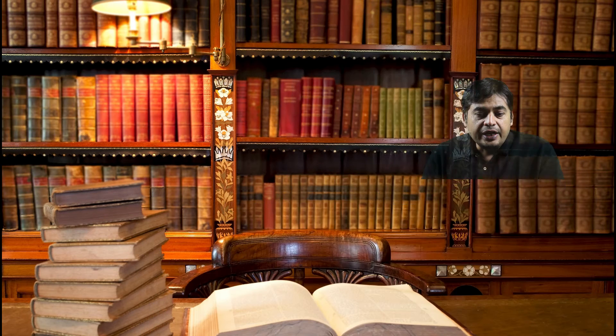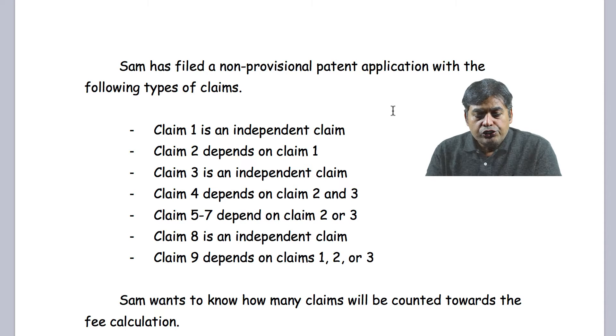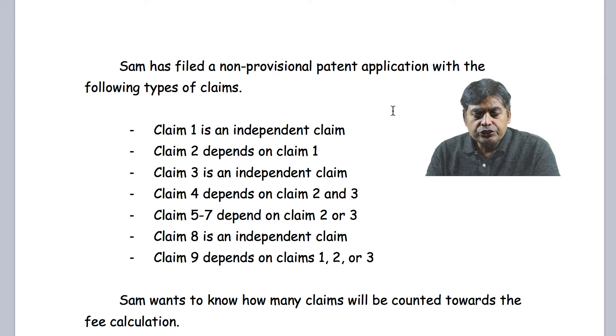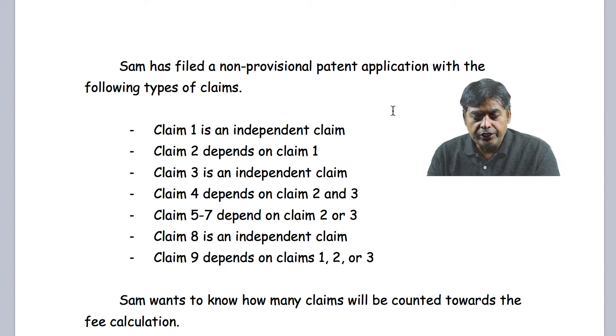Once you have that, you're going to be fine. Let me walk you through the scenario I have written up for you. Sam has filed a non-provisional patent application with the following types of claims: Claim 1, Claim 2, Claim 3, 4, 5, 6, 7, 8, and 9.